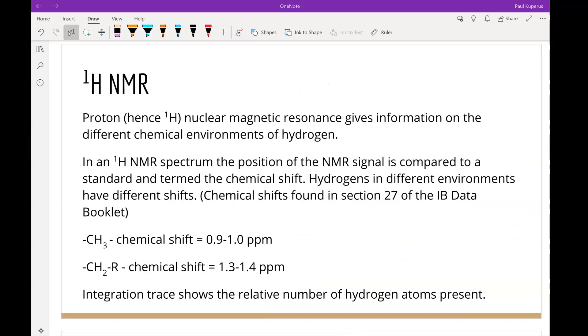Proton NMR gives us information about the different environments of hydrogen. CH3 has one environment. Something that has a CH2 is a different environment to the CH3. Something that has a COH is something different still. So we have multiple different hydrogen environments in our organic compounds.